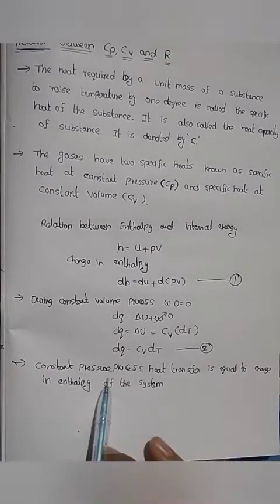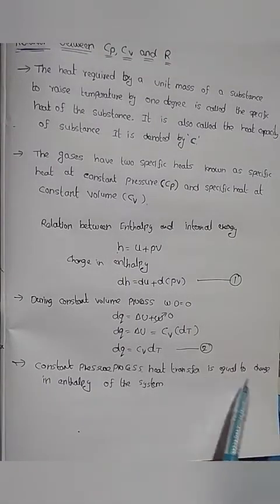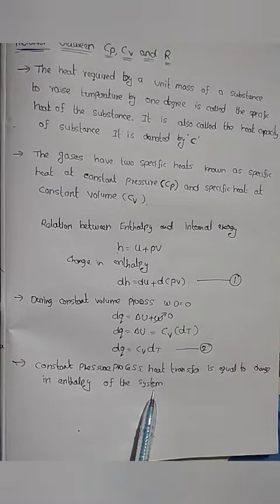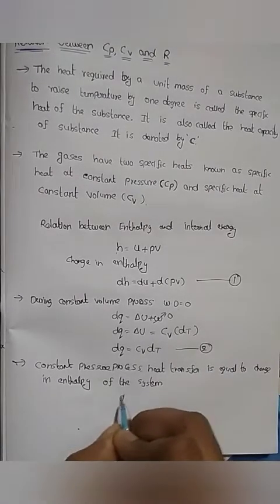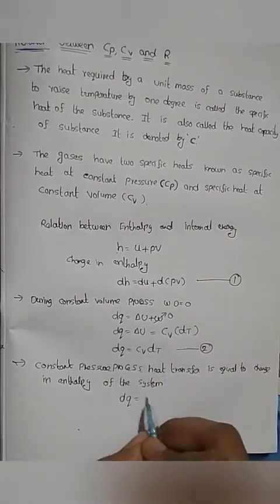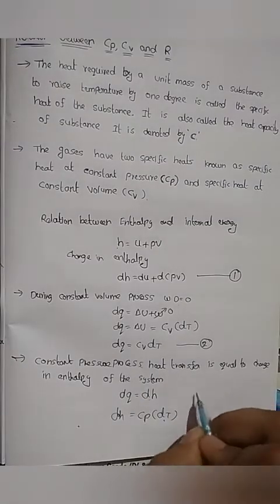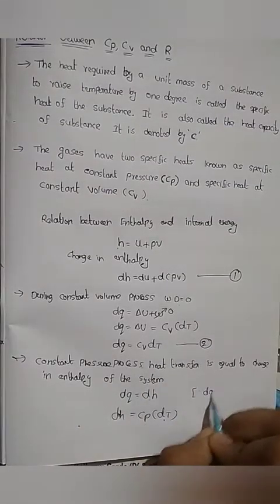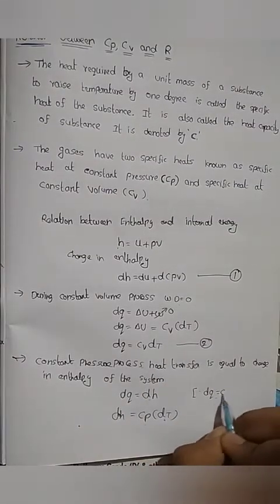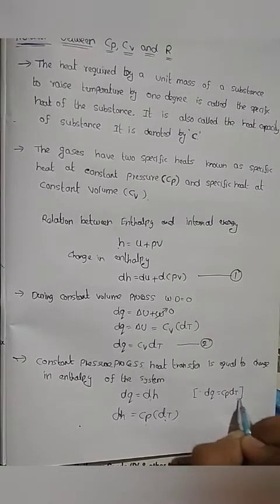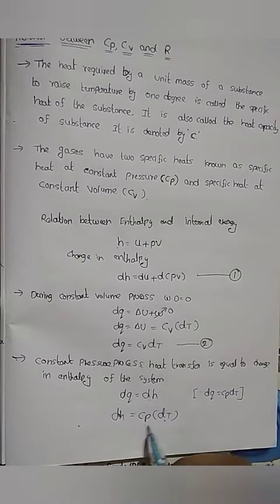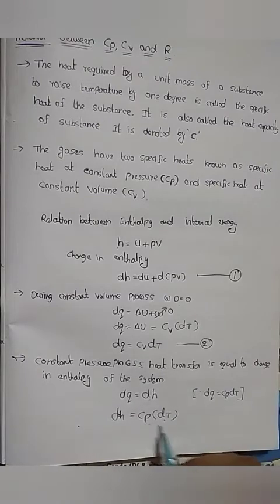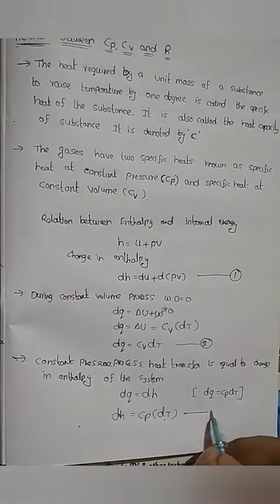During the constant pressure process, heat transfer is equal to the change in enthalpy of the system, so dQ = dH. We also know that dQ = Cp·dT at constant pressure. Therefore dH = Cp·dT. This is equation number 3.